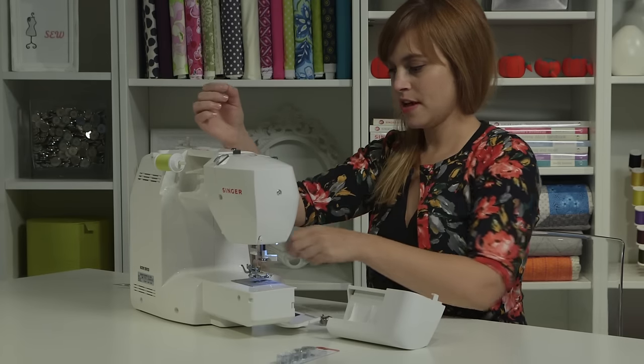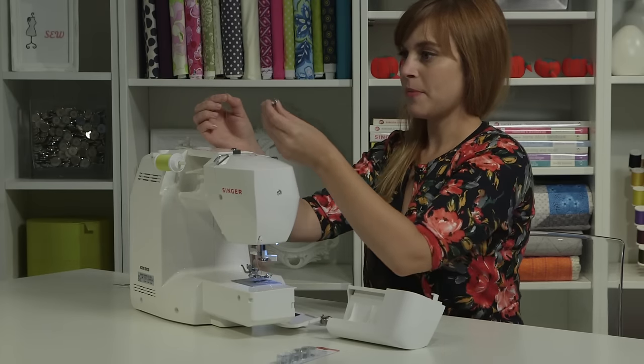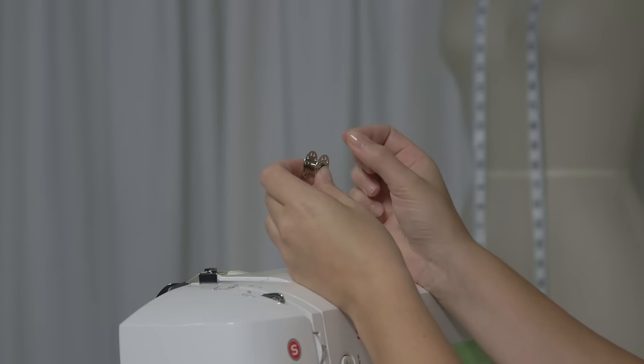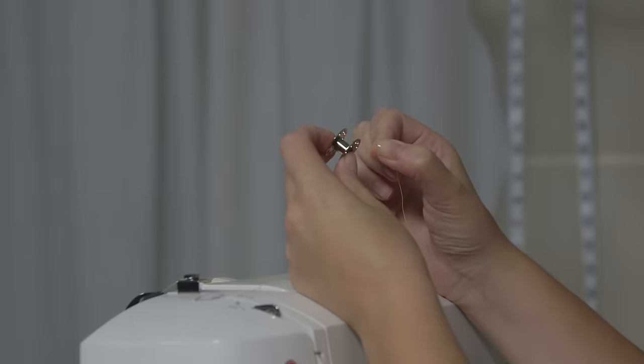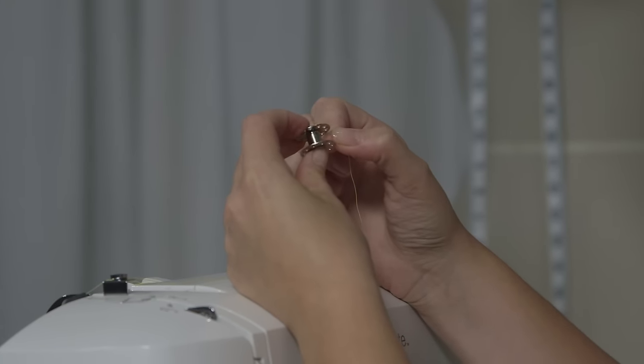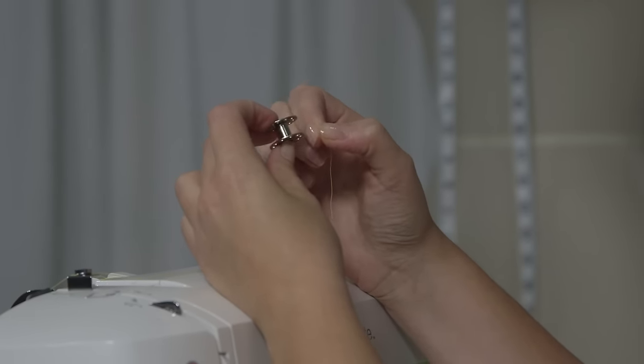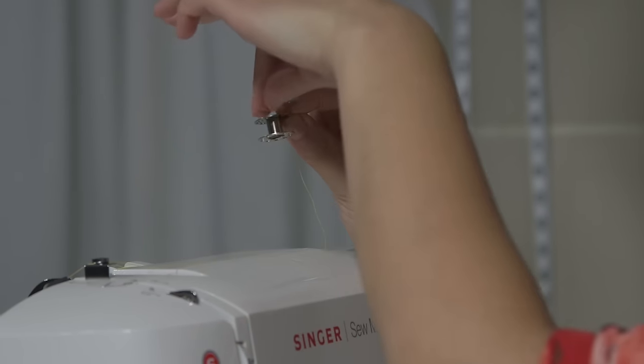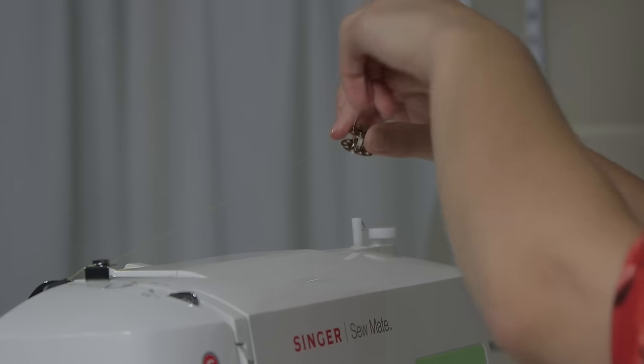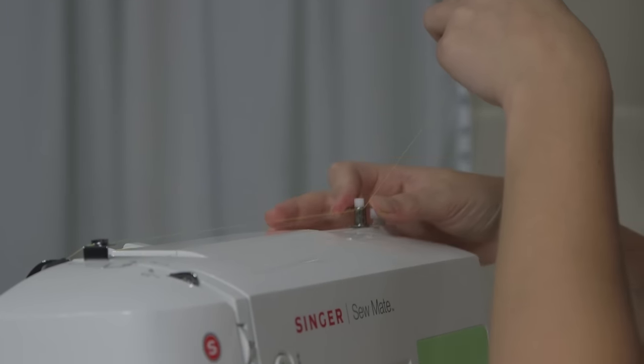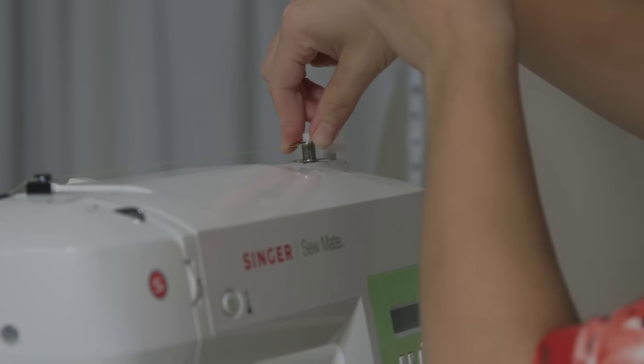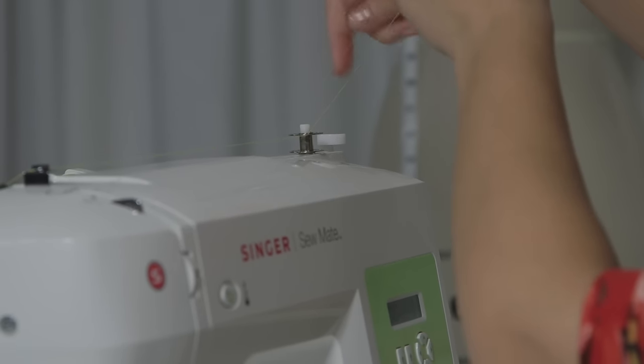Now we're going to take our thread tail and our bobbin, and we're going to choose any of the holes on the bobbin, it doesn't matter which one, and we want to thread the thread up through one of the holes. So we're going to go in from the inner part of the bobbin and go up and out the top, like that. We're going to hold onto the tail and push the bobbin down onto this part, which is the bobbin winding spindle. You want to make sure you push it all the way down.